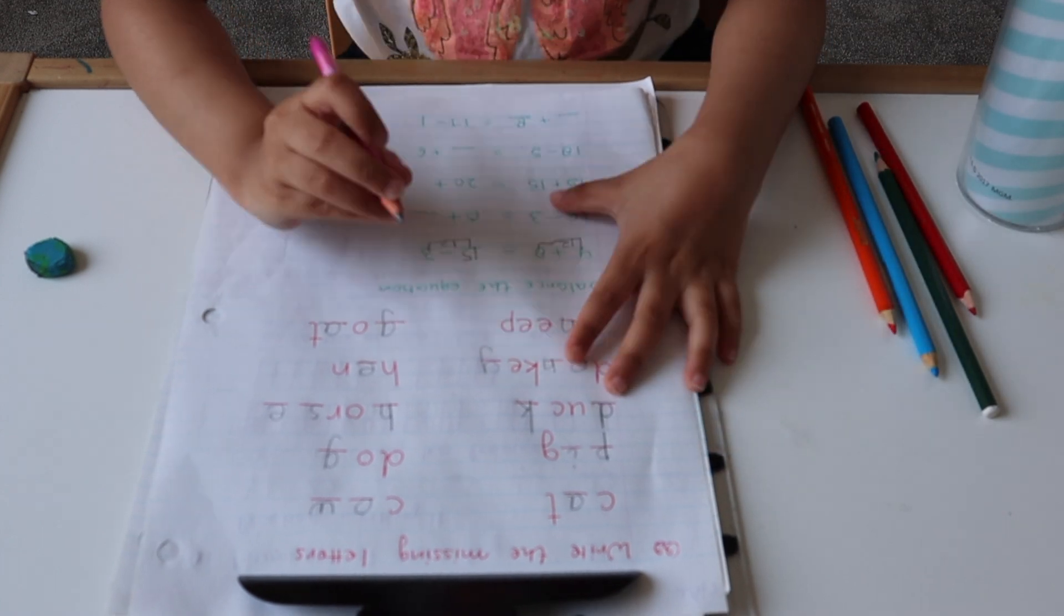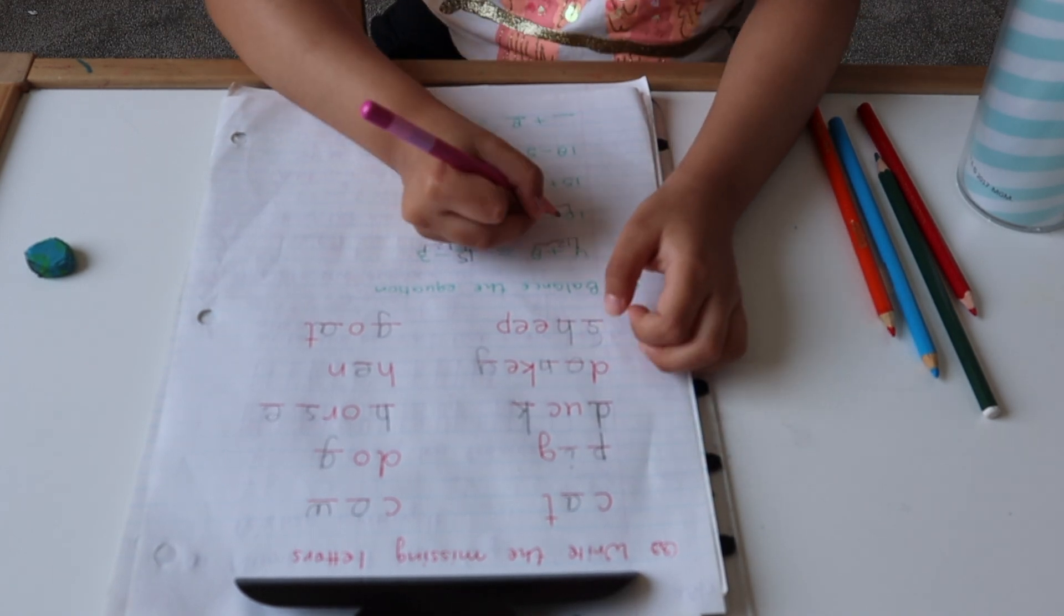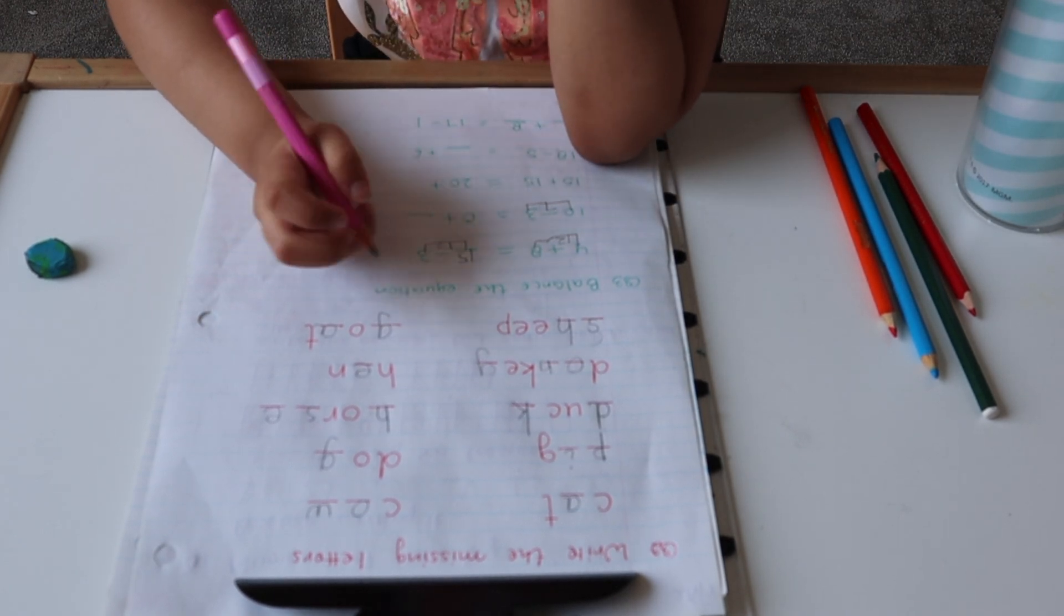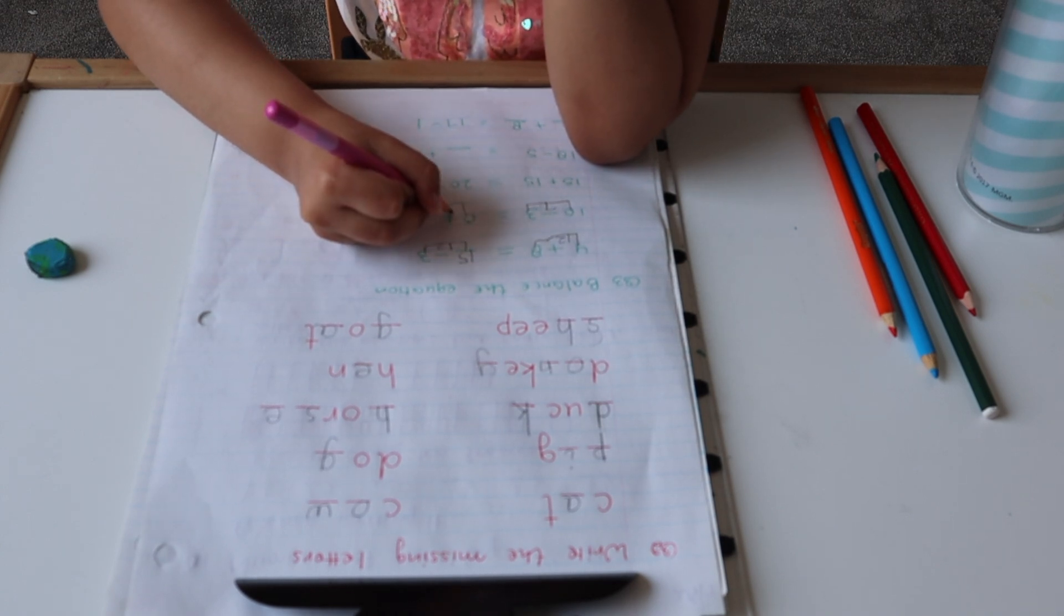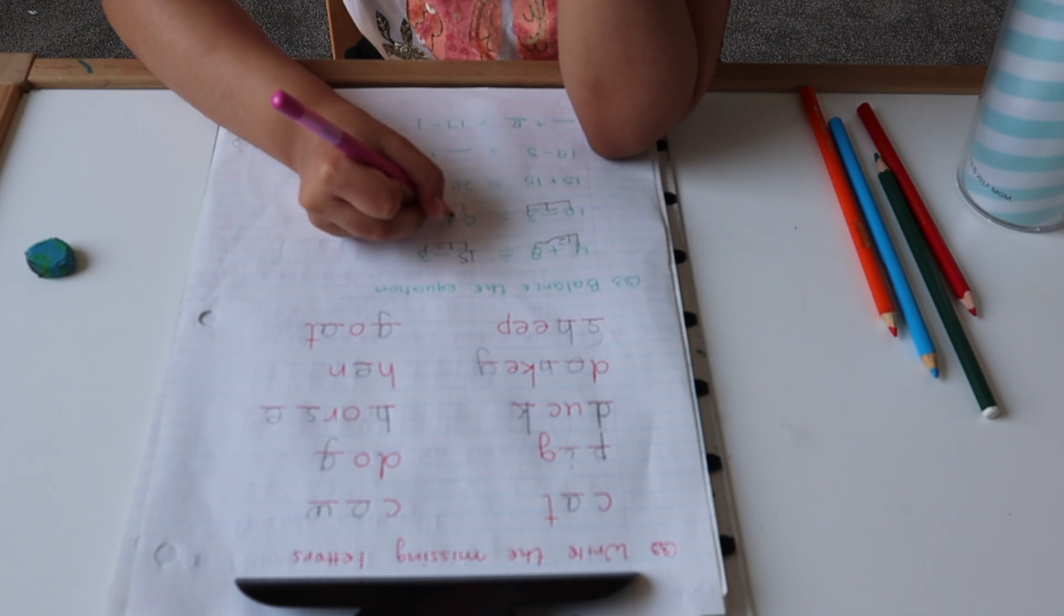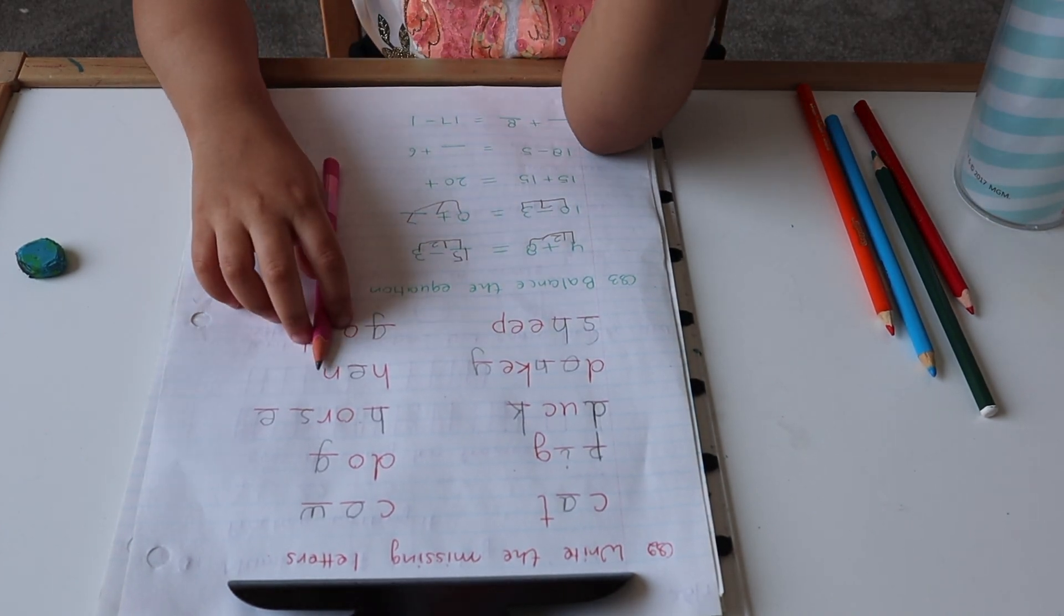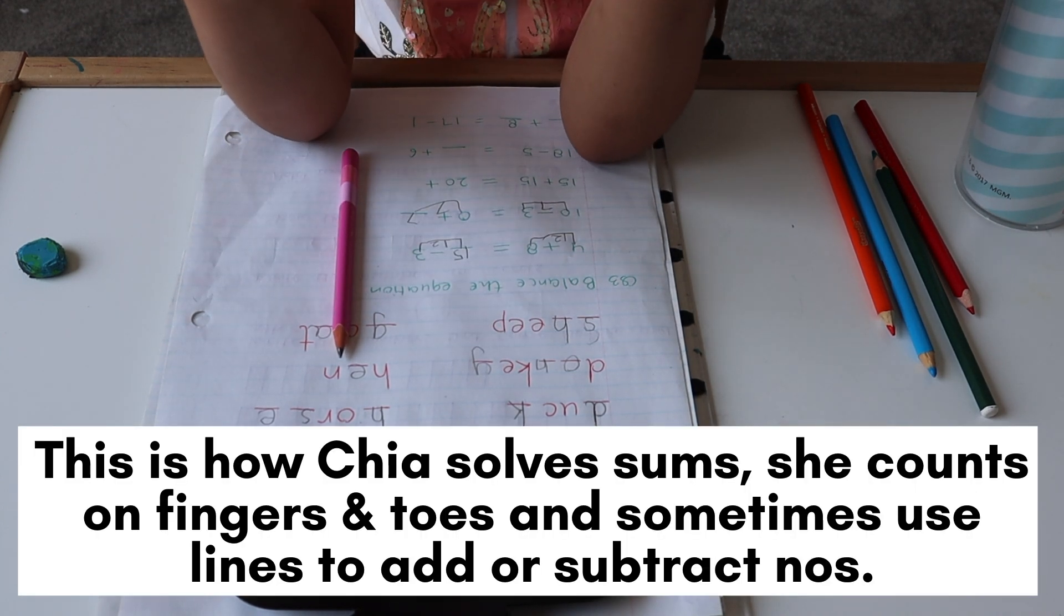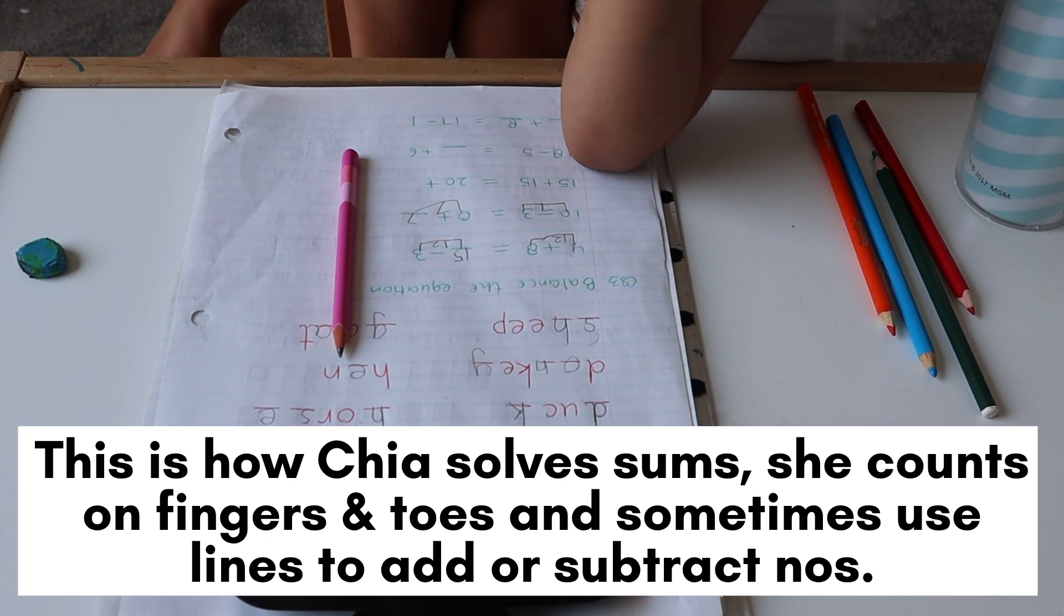10 minus 3 equals 7. 11, 12, 22, 23, 24, 25, 26, 27, 28, 29, 30.